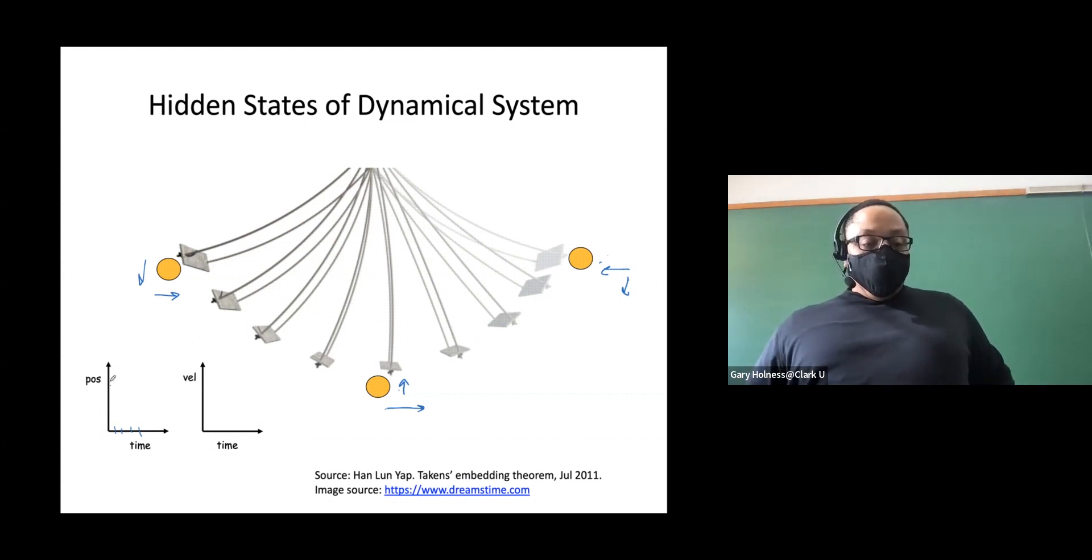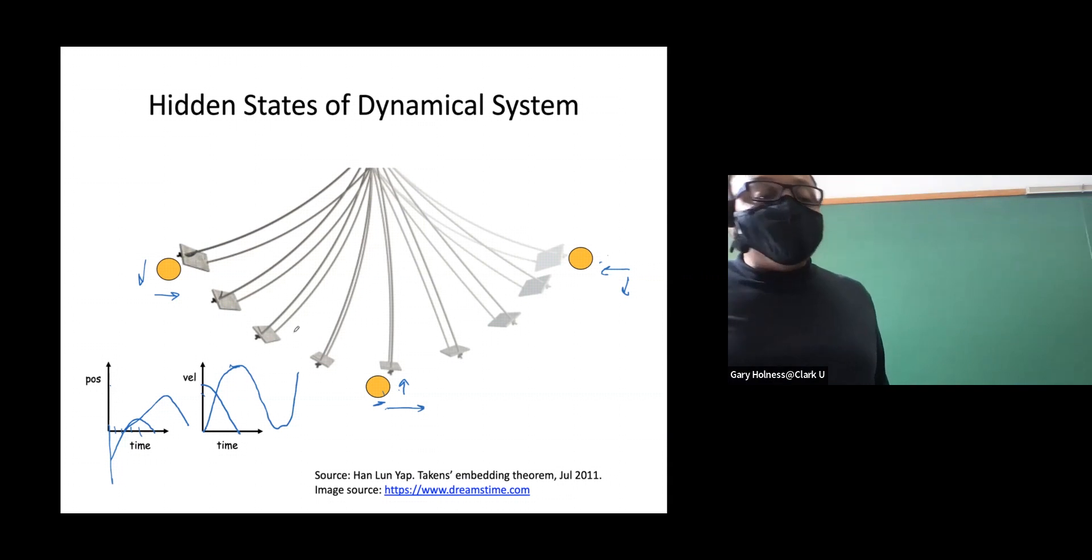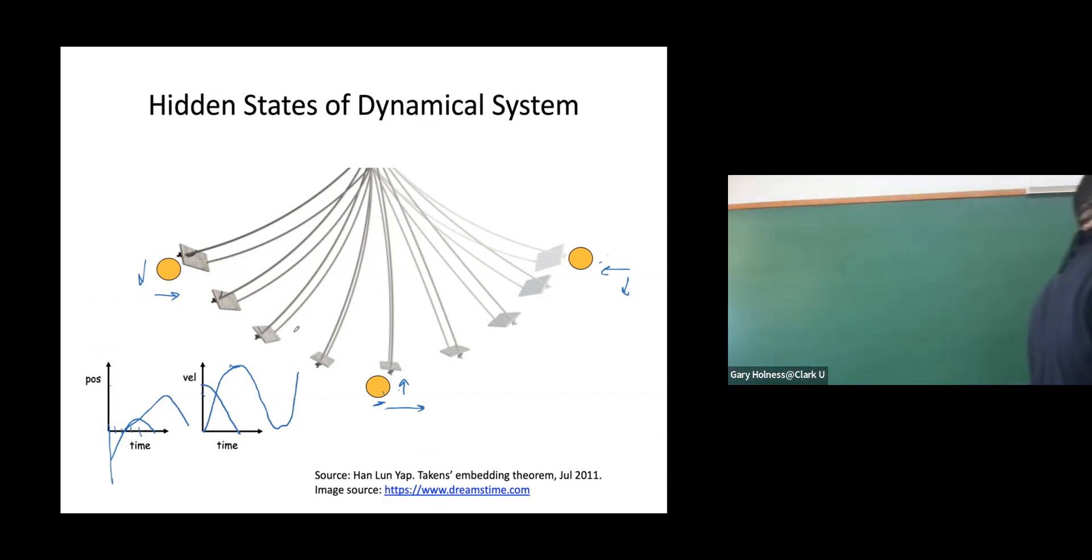The position is going to start out very negative and that position over time is going to get more positive, then start getting more negative. Likewise with the velocity, we're going to start with some positive velocity. The velocity is going to start out at zero and get more and more positive. It's going to reach a maximum at this point in the center, then get more and more negative, then reach zero and continue.